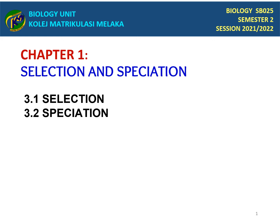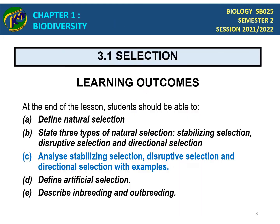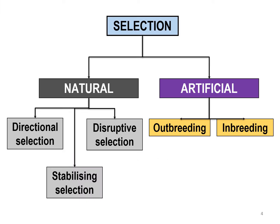Hi, this video will explain about selection and speciation. There are two subtopics under chapter 3: first, selection, and then second, speciation. For selection, the learning outcomes are for students to be able to define natural selection, state three types of natural selection, analyse stabilising selection, define artificial selection, and describe inbreeding and outbreeding.